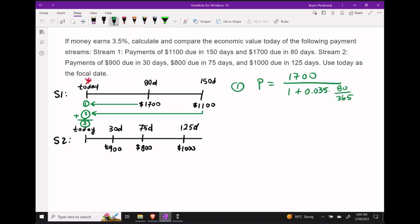Evaluating number one first, we take our future value of $1,700 and divide by 1 plus RT. The rate is 3.5% simple interest, and the time variable is 80 over 365. Simplifying that expression, we get $1,687.06.